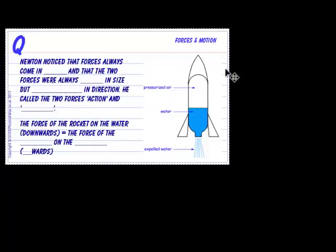And Newton noticed this and he made his third law. So this is Newton's third law, that forces always come in pairs and that the two forces were always equal in size but opposite in direction. And he called these two forces action and reaction.